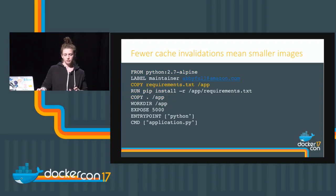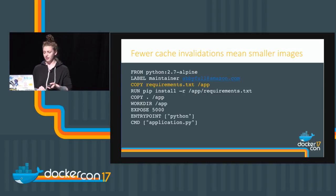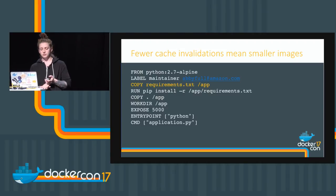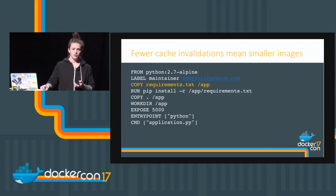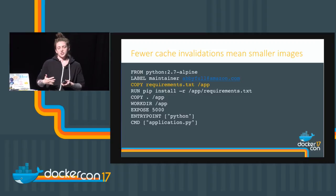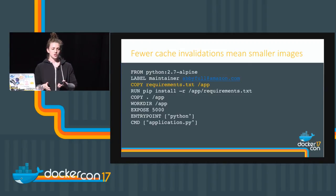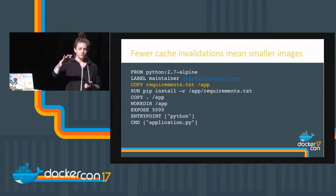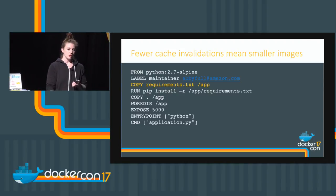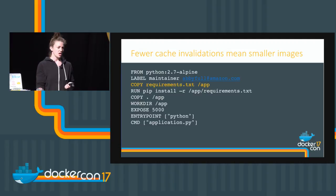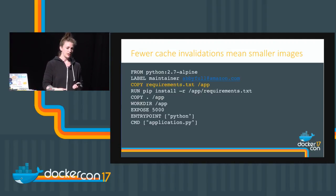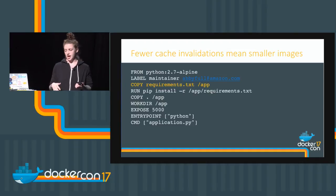Fewer cache invalidations means smaller images. Think about the order that you do things. Once you've invalidated the cache and run an instruction that's invalidated it, you run every subsequent child command after that. So if you can put off invalidating the cache — something like a run statement that's going to invalidate it — put everything you can before that. Hold off the cache invalidation as long as possible so you're not running a ton of stuff you don't need to, just because you invalidated the cache a couple steps earlier.